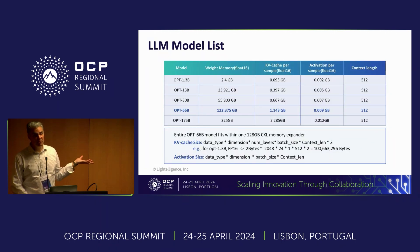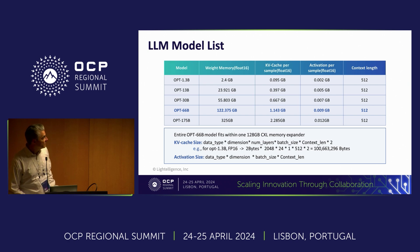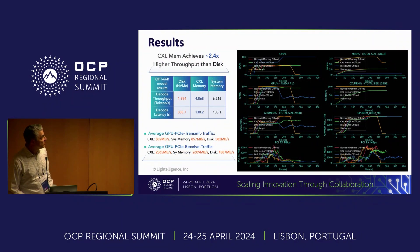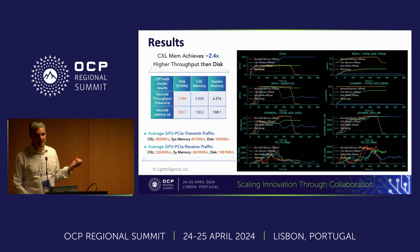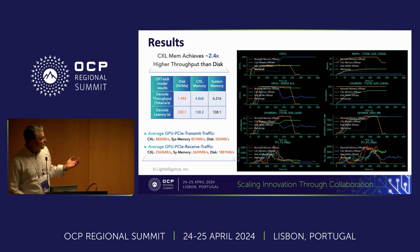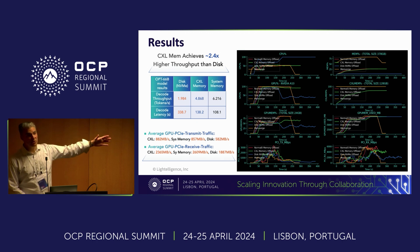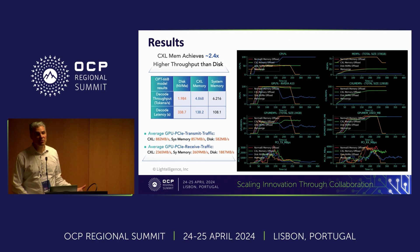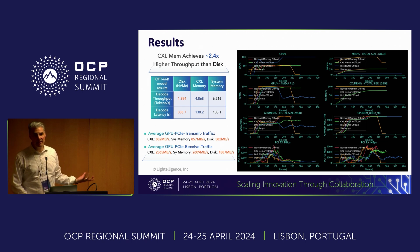The model we chose was OPT-66B because it could fit in a single memory expander — so it was a focused case study. The results: CXL memory achieved 2.4x better decode throughput than disk. The model was running faster, and CXL memory approaches the performance of system memory — about 70% of local DRAM performance. Not bad, but 2.4x better than SSD.